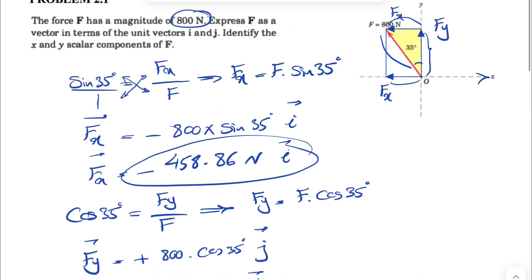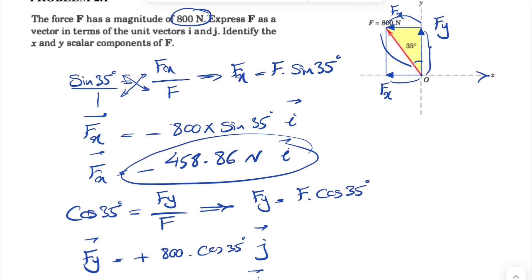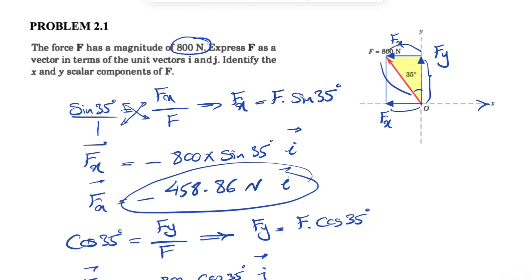One quick shortcut: we're going to be dealing with this force F later in this chapter. If we have the angle with the y axis, the x component would be the sine of that, and the y component would be cosine. But if we have this angle as opposed to the other one, which would be basically 90 minus 35, we're going to have cosine of that angle for Fx and sine of that angle for Fy.